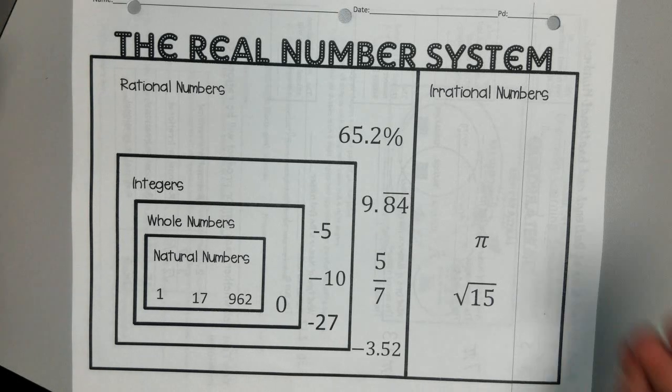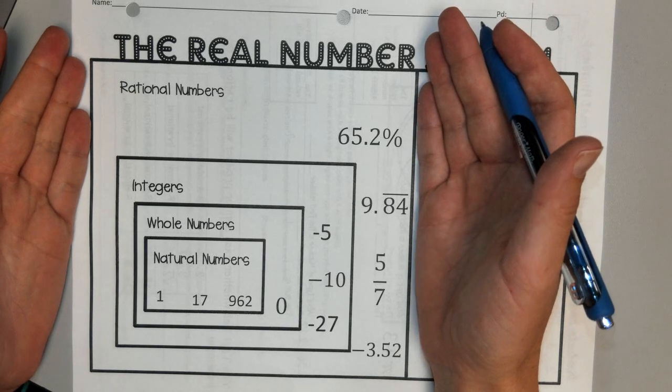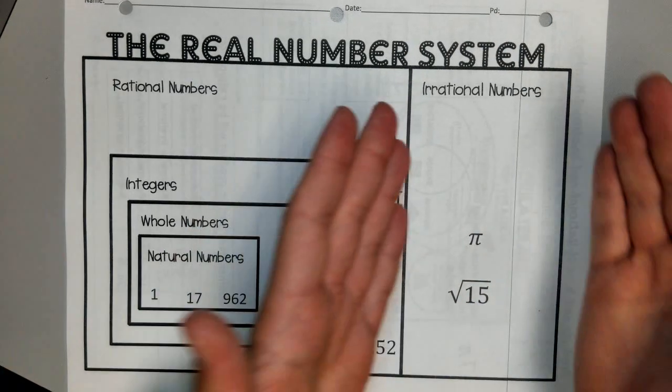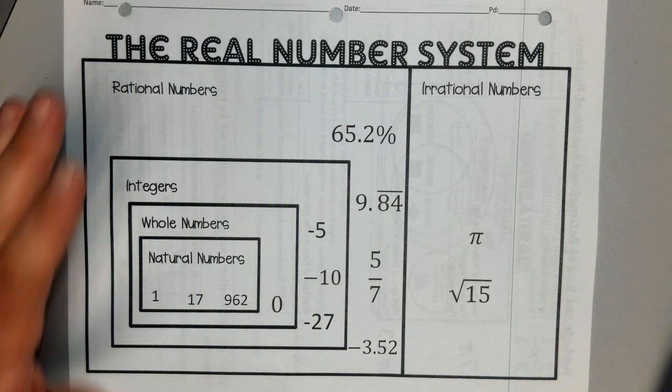So the real number system is broken up into two large groups. You have your rational numbers, which have multiple subsets, and your irrational numbers, which are completely on their own.